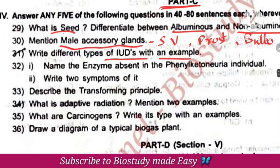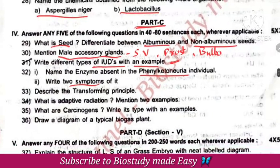Different types of IUDs with examples. The enzyme absent in phenylketonuria and two symptoms of the condition.